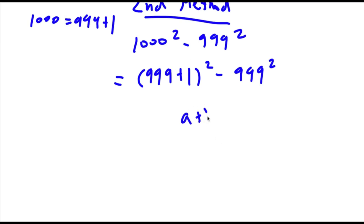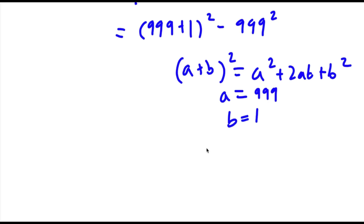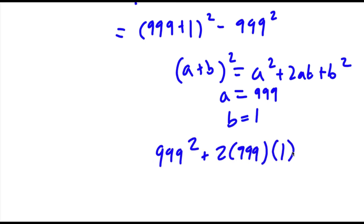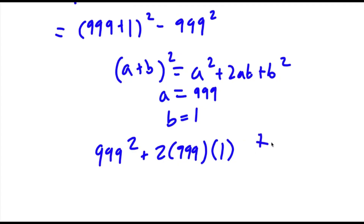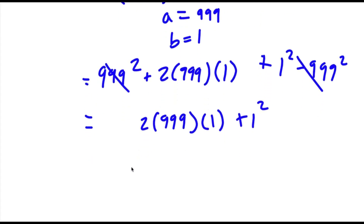Now, if I have something in the form (a plus b) squared, this is equal to a squared plus 2ab plus b squared. So in this case, a is equal to 999 and b is equal to 1. So this would be 999 squared plus 2 times 999 times 1 plus 1 squared, and then I have my minus 999 squared at the end. These two will cancel out, so I'll be left with 2 times 999 times 1 plus 1 squared. Now, 2 times 999 is 1998, so I have 1998 plus 1, which is equal to 1999.